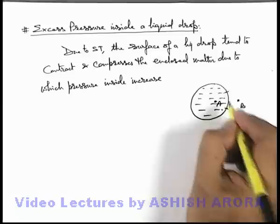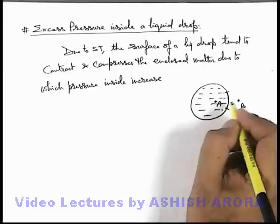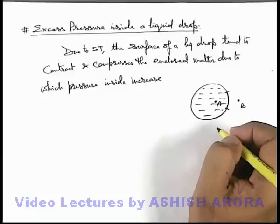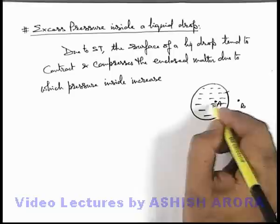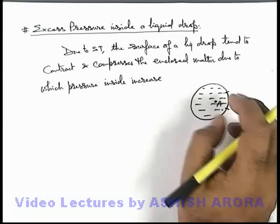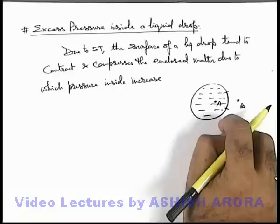If we consider a small section of the surface, we can see that it is having a convex curvature on side B. It shows that pressure at A is more than the pressure at point B. The surface will be convex on the side of B only then; otherwise, if the pressures are equal at A and B, the surface would be flat. So in a liquid drop, it takes a spherical shape because of its surface tension only. So we can always state that pressure at point A is more than pressure at point B.